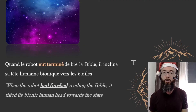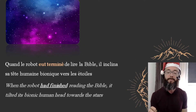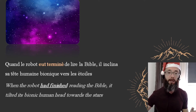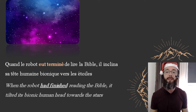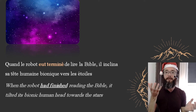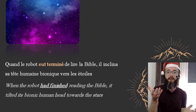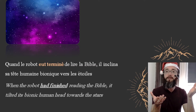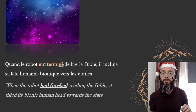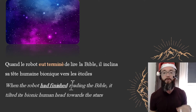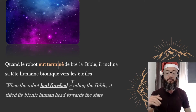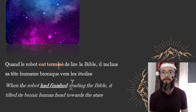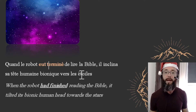Quand le robot eut terminé de lire la Bible, il inclina sa tête humaine bionique vers les étoiles. When the robot had finished reading the Bible, it tilted its bionic human head towards the stars. So on the timeline, one action happens before another. When the robot had finished reading the Bible — that happens before the moment where it tilts its head and stares at the stars. In a nutshell: passé antérieur is the action happening before something in the passé simple.